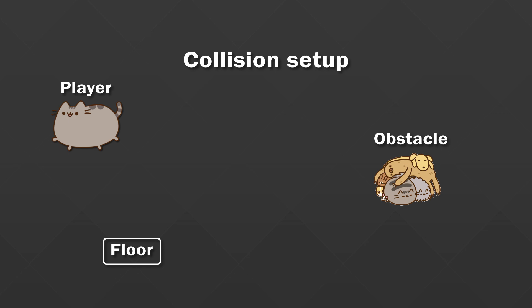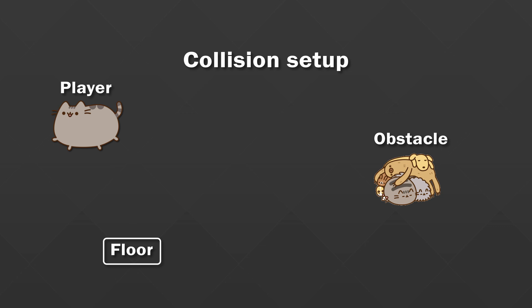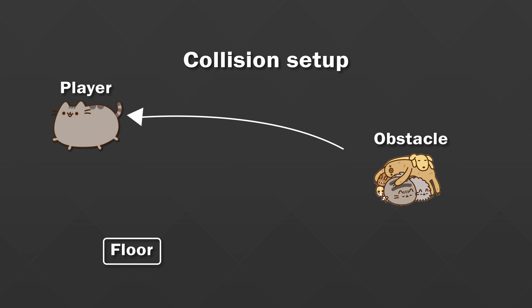Let's visualize our game. We have three different kinds of objects: the cat, the obstacle, and the floor. The cat needs to interact with both other objects so it can stand on the floor and collide with obstacles - it's on the cat layer and has masks for the obstacle layer and floor layer. The floor only needs to be on its own layer with no mask, since it doesn't need to interact with anything. The obstacle layer can only interact with the cat layer, not with itself or the floor.